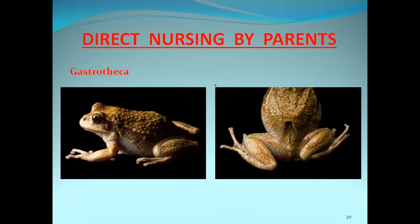The next example is Gastrotheca. In Gastrotheca also, on the dorsal surface of the female's body, a special type of chamber is developed. This special chamber has an opening near the back of the organism. The laid larvae are taken into this chamber through the opening, and development takes place inside this chamber on the back of the female. Once development is finished, the larvae leave the chamber.